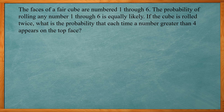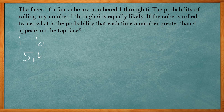The faces of a fair cube are numbered one through six. The probability of rolling any number is equally likely. If the cube is rolled twice, what's the probability that each time a number greater than four appears? We need to find the probability of rolling greater than four. Numbers five and six satisfy that — so two out of six, which reduces to one-third.